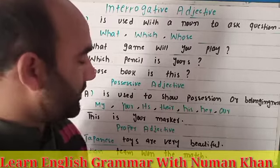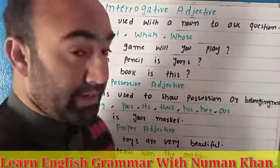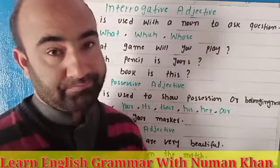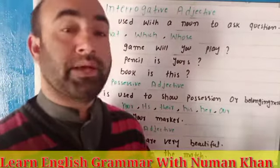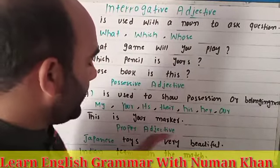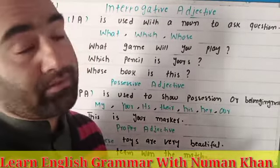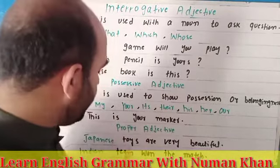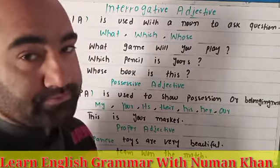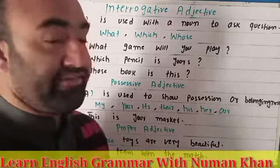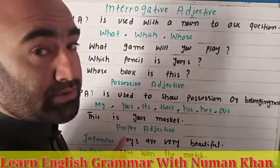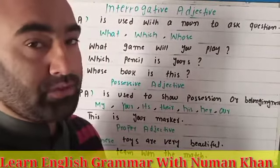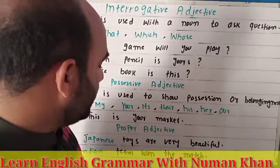The last one is proper adjective. Proper adjectives are made from proper nouns. For example, India, Pakistan, and Japan are proper nouns. When we make adjectives from these proper nouns, they are called proper adjectives. For example: 'Japanese toys are very beautiful' — here 'Japanese' is derived from the proper noun 'Japan' and modifies the noun 'toys.' Another example: 'Indian team won the match' — 'Indian' is derived from 'India' and modifies 'team.' That is why they are called proper adjectives.